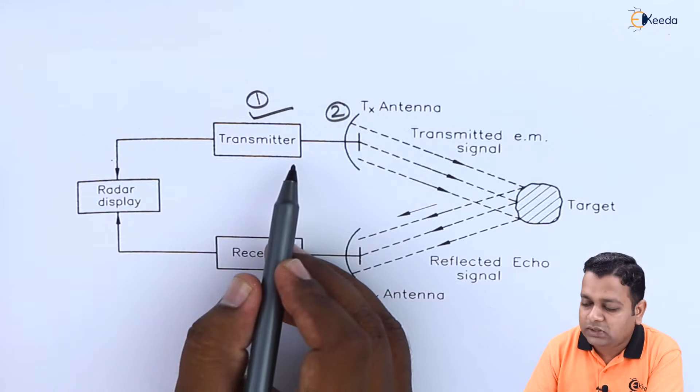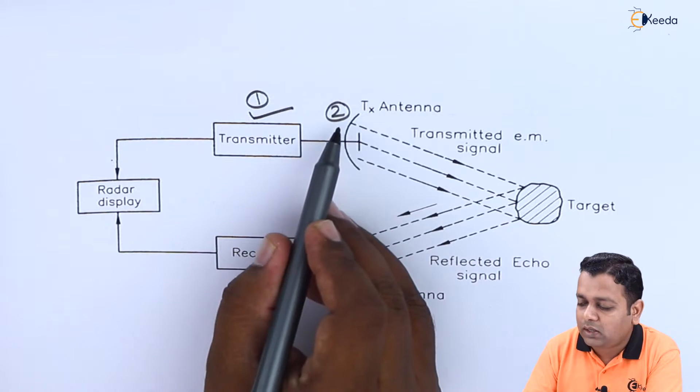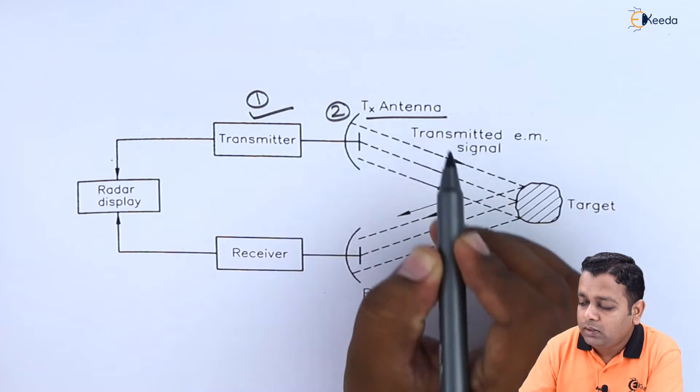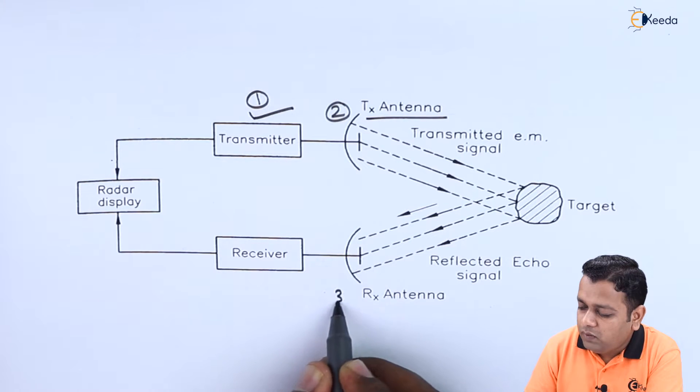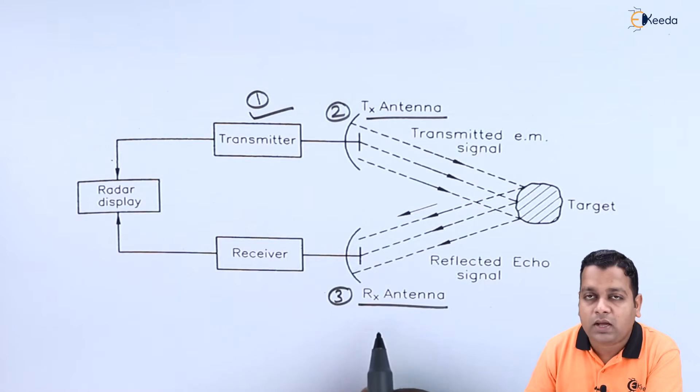Which will receive the signal, process it further, and give it as input to the radar display. One is the transmitter section, second we take the transmitting antenna.